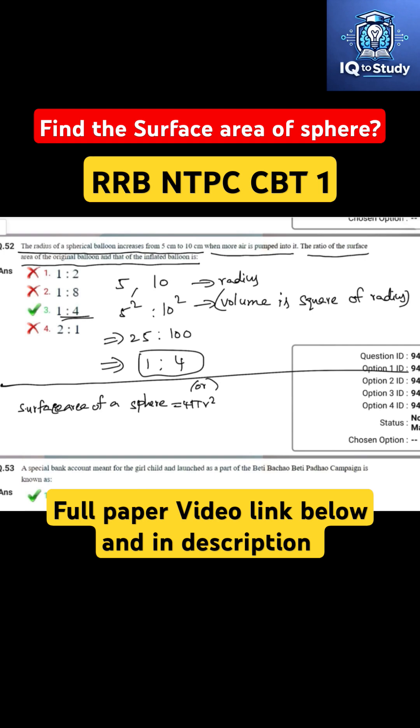Here, 4 pi r1 square by 4 pi r2 square, that is equal to